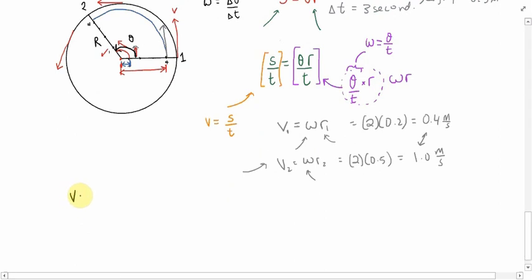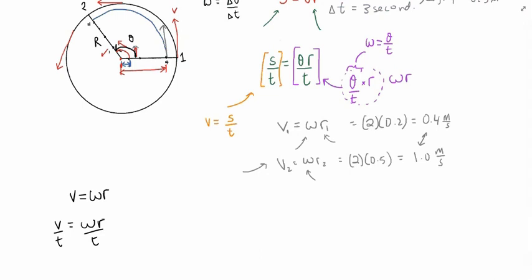Now, given that v = ω × r, we might also be interested in how quickly velocity is changing. If something is making a wheel spin faster and faster, or slowing it down, there is a change in rotational velocity. To measure this, we again take the time rate of change — dividing both sides by time — and we arrive at another new formula.